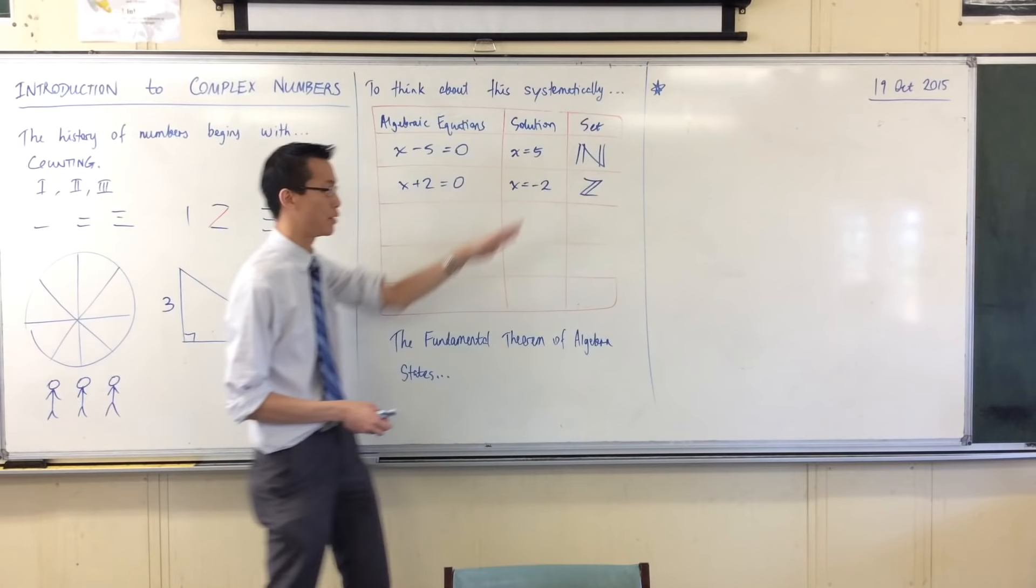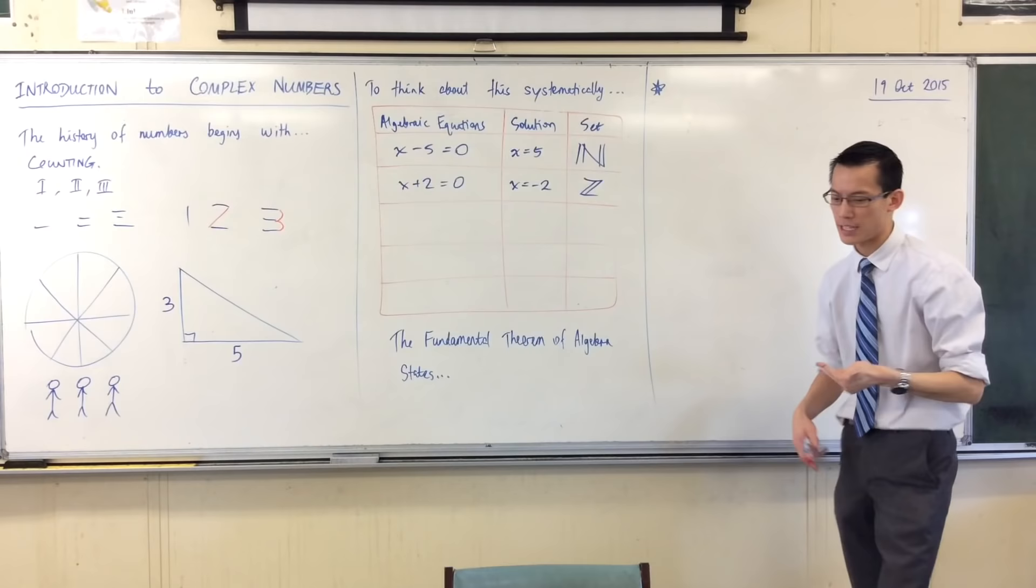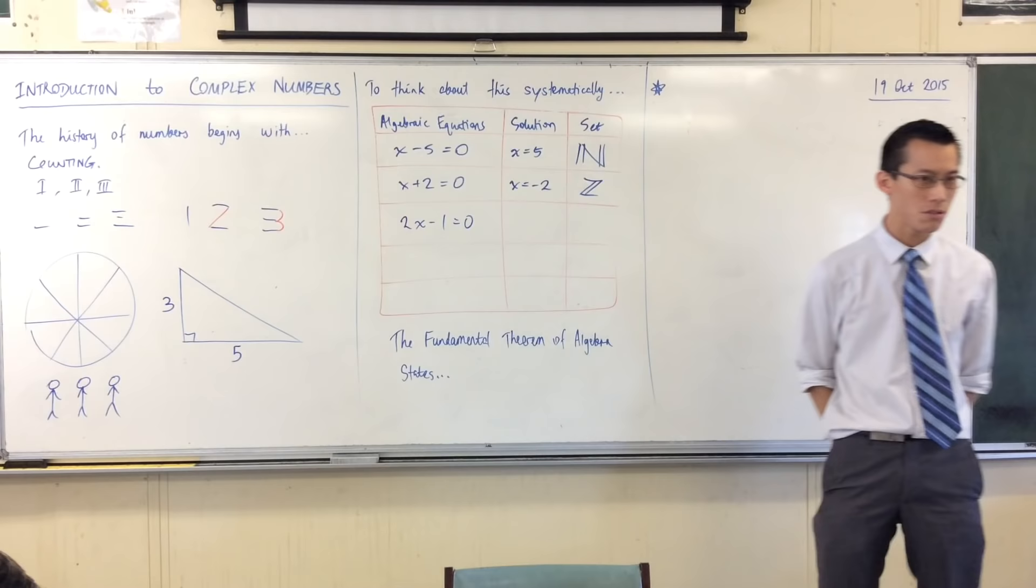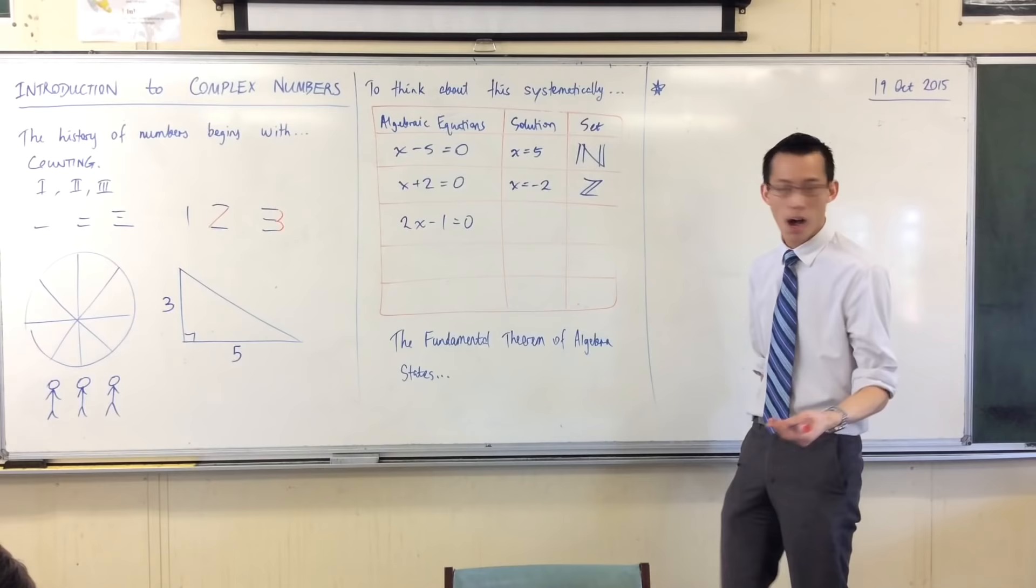Alright. Now, we went past the natural numbers. We went past integers. If we stay using the counting numbers to construct this thing, for instance, again, another simple equation, two x minus one equals zero. What is the solution to this algebraic equation? X equals a half.